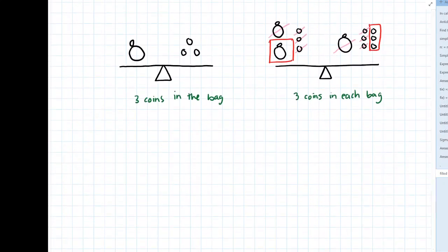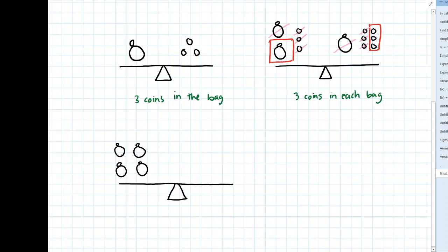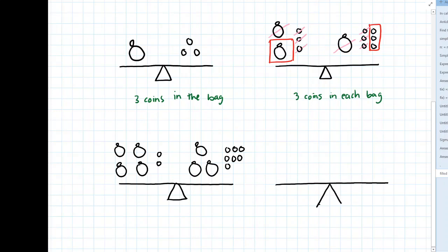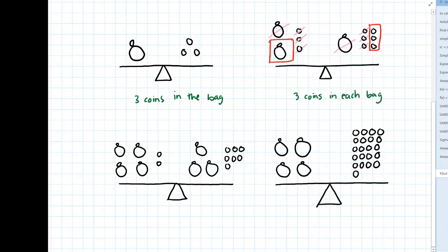So let's do two more examples. I've got a balance beam here with four bags and two coins on one side, and then three bags and seven coins on the other. And again, our balance beam is balanced. In this next example, there are four bags of coins on one side and 24 coins on the other. Let's pause the video and see if you can come up with the number of coins in each bag.